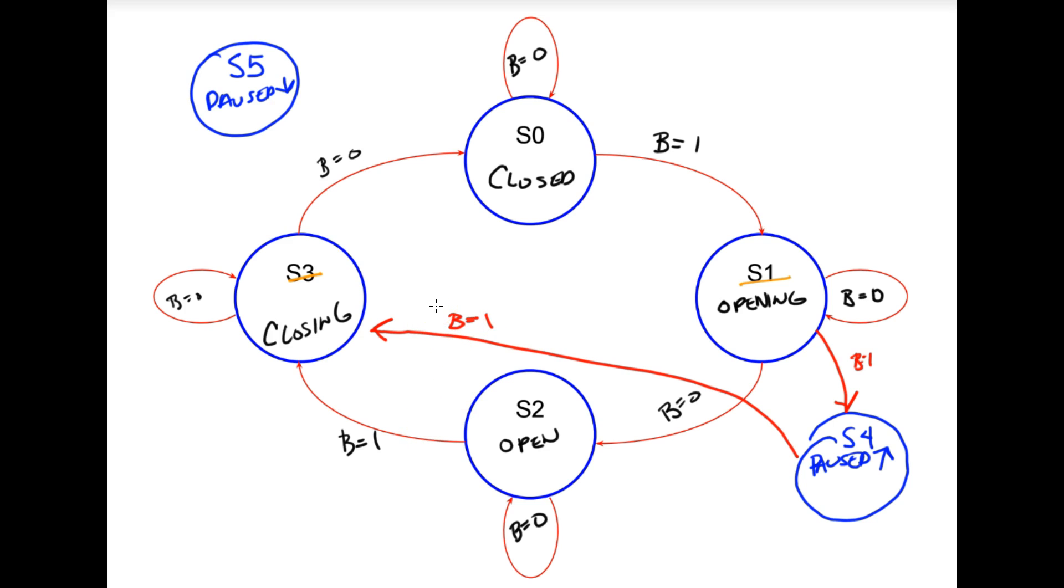You can see how this is starting to get a little bit more complex. So again, if it is closing and I press the button, it's going to go to paused going down. And if I press it while it was paused, while it was going down, it's going to go back to opening. And then I will only get to open if I do not press the button. So that is a more complex state diagram. We would take this and then we would feed it into a table. And that's what I'll show you next, but with a slightly simpler example.